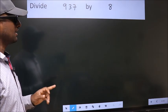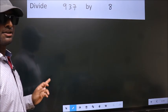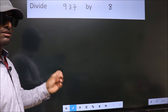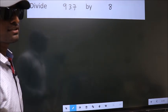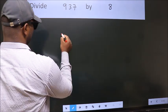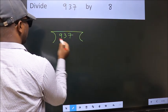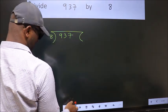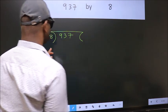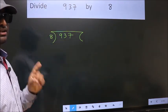Divide 937 by 8. To do this division, we should frame it in this way. 937 here, 8 here. This is your step 1.